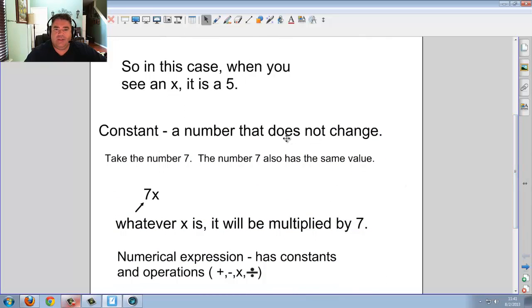Now, a constant is a number that does not change. Take the number 7. The number 7 is always a value of 7, because 7 is 7. Now, when you see, like, 7x, the 7 is the constant. And what that constant means is there will be 7x's. It's saying there's 7 of these variables.